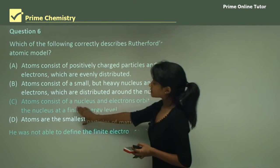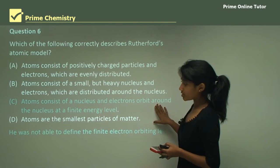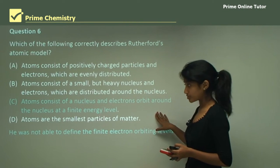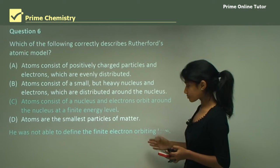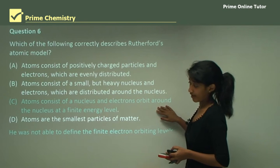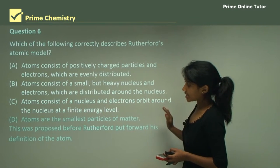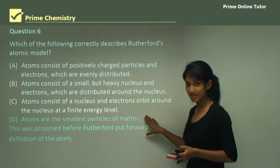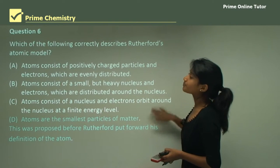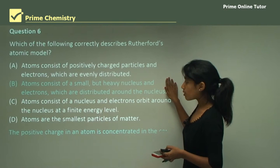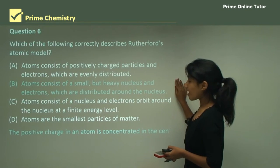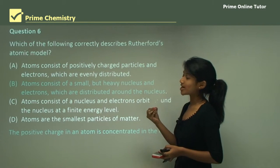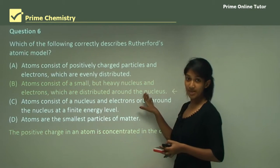Option C says atoms consist of a nucleus and electrons orbiting at a finite energy level — this was much more advanced than Rutherford and came from Bohr's proposal, so C is incorrect. Option D says atoms are the smallest particles of matter — this is Dalton's most primitive idea, so not the answer. Option B says atoms consist of a small but heavy nucleus and electrons distributed around the nucleus — this is correct, because Rutherford said all mass and positive charge were concentrated in the center. So B is the answer.